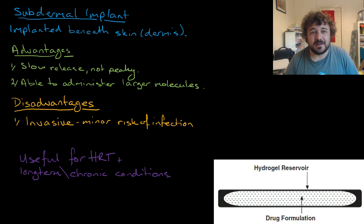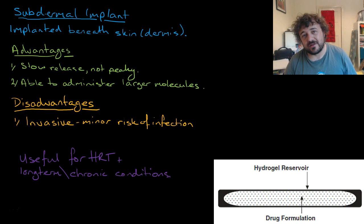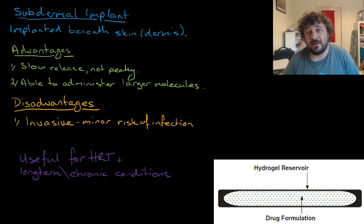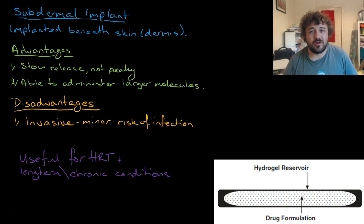Then we've got the subdermal implant — it's a similar thing, but instead it's injected beneath the skin or in the dermis. Advantages: it's a slow release, not peaky — it works evenly over a long time. You're able to administer larger molecules without worrying about absorption through the skin. The disadvantage is it is invasive, which means there is a minor risk of infection. It's really useful for hormone replacement therapy or long-term chronic conditions.